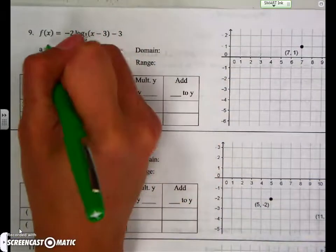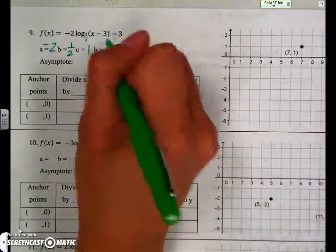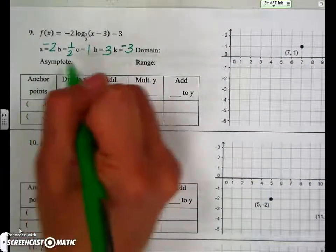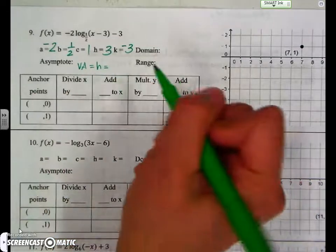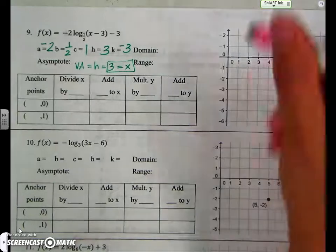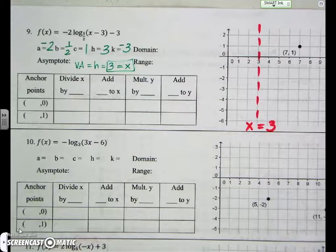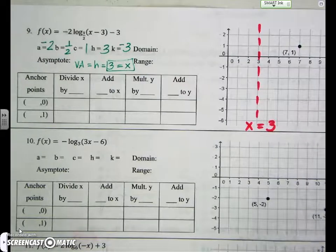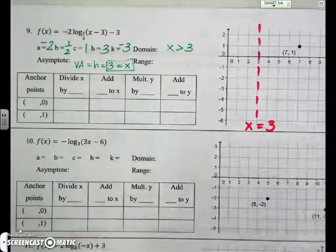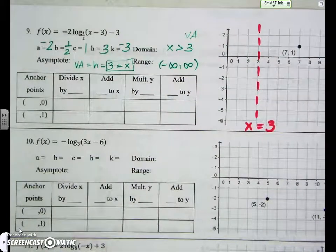What's the value of A? Negative 2. B, 1 half. C should be 1. H, the opposite of what you see inside the parentheses, positive 3, and K is negative 3. Your asymptote is the vertical asymptote, depends on the letter H, which in this case is 3. So this is your vertical asymptote, x is equal to 3. So where you see x is equal to 3, you're going to draw a dashed line going down at x is equal to 3. What's your domain? All x values that are greater than your vertical asymptote. And then what's your range? Negative infinity to positive infinity. All the time. Good.